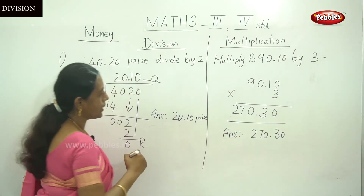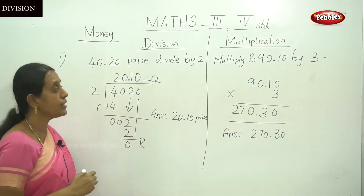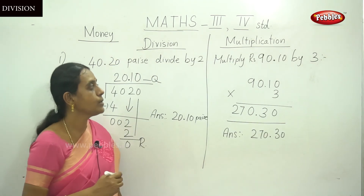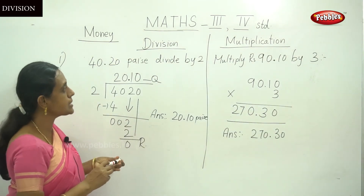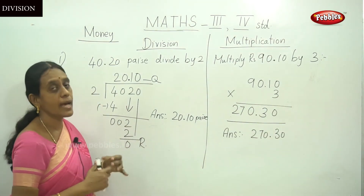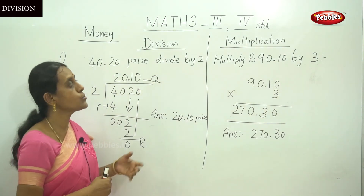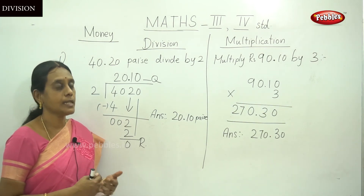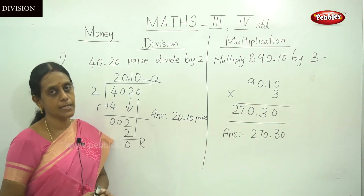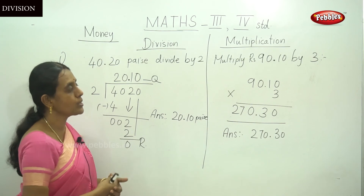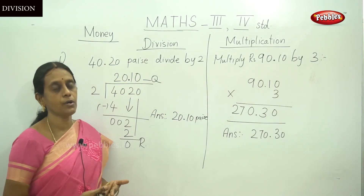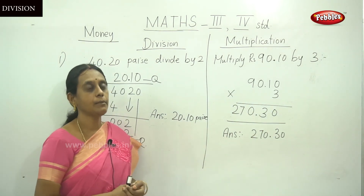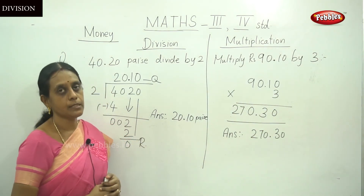This is the method to divide money by a divisor. So we have discussed how to add, how to subtract, how to multiply, and how to divide money — that is Rupees and Paise. Next we will move on to conversion: how to convert money into Paise and Paise into money using the unit method.